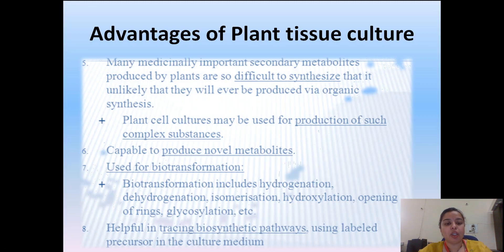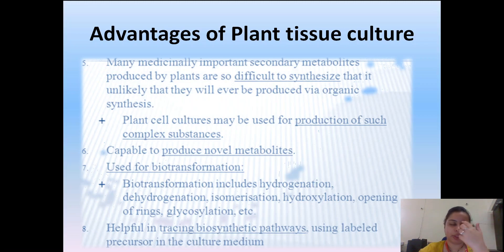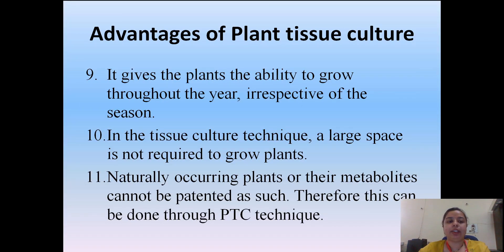Plant tissue culture is used for biotransformation — such as hydrogenation, dehydrogenation, isomerization, hydroxylation, opening of rings, and glycosylation. These biotransformation steps that cannot be replicated in the lab can be carried out in plant tissue culture. It is also helpful in tracing biosynthetic pathways using tracer technique, where we label the precursor and observe what biosynthetic changes occur to determine the final product.